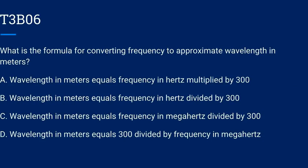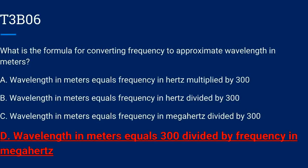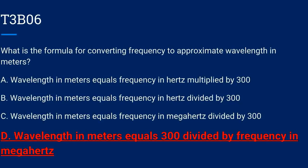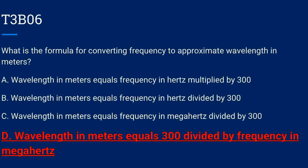T3B06. What is the formula for converting frequency to approximate wavelength in meters? A. Wavelength in meters equals frequency in hertz multiplied by 300. B. Wavelength in meters equals frequency in hertz divided by 300. C. Wavelength in meters equals frequency in megahertz divided by 300. Or D. Wavelength in meters equals 300 divided by frequency in megahertz. The correct answer is D: wavelength in meters equals 300 divided by frequency in megahertz.